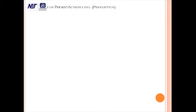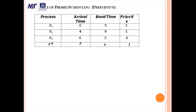Now we will look at an example where preemptive priority scheduling is used. Here, 4 processes are there. Their arrival times are different: 0, 4, 6, and 8. So the first process comes into the ready queue at 0 milliseconds, the second process arrives at 4 milliseconds, the third at 6 milliseconds, and the fourth at 8 milliseconds. Their burst times are 5, 8, 2, and 6. And priorities are also given: 2, 1, 4, and 3.